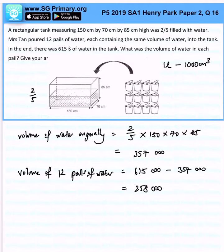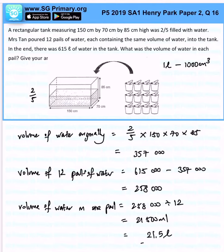So therefore the volume of water in one pail, that is 258,000 divided by 12, and that will be 21,500 milliliters. Convert it into liters, that will be 21.5 liters. That is the answer for this question.